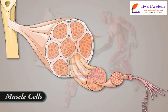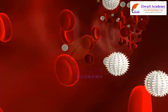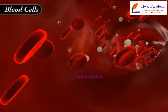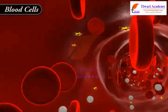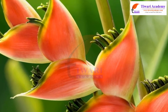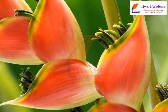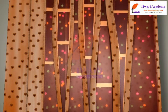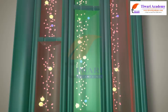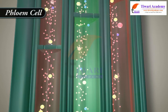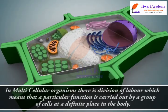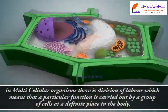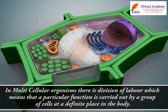Muscle cells contract and relax to cause movement. Blood cells flow to transport oxygen, food, hormones, and waste materials. In plants, xylem and phloem cells conduct food and water from one part to another in multicellular organisms.